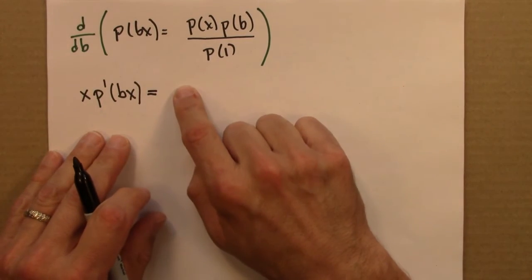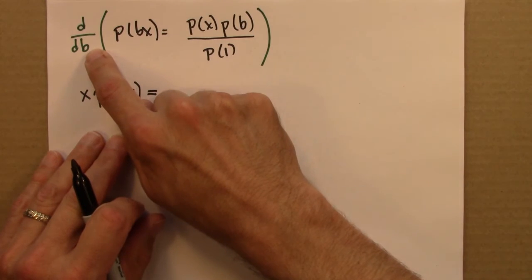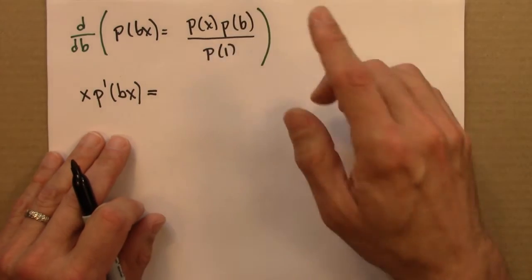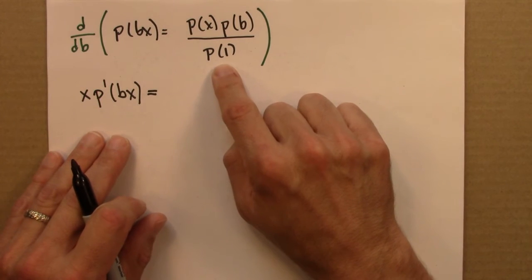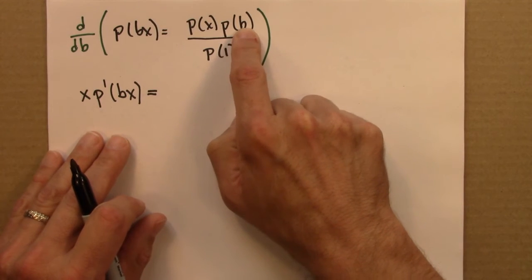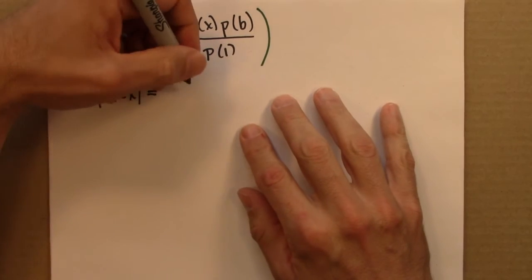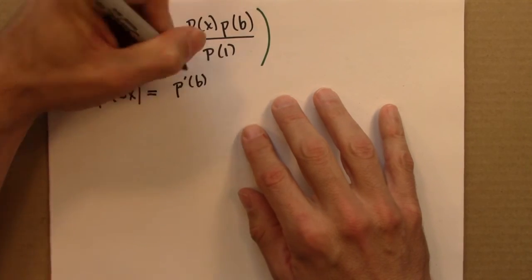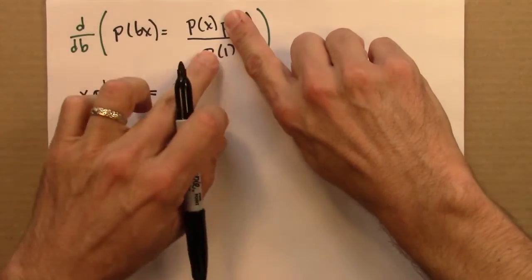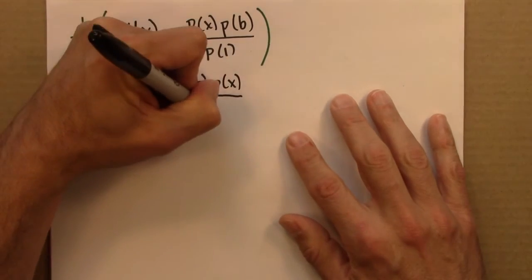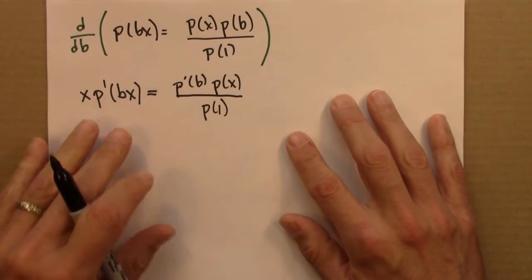Over here on the right hand side, again I'm taking the derivative with respect to B. P of x and P of 1, whatever they are, they don't depend on B. So those are just constants. The derivative of P with respect to B is just P prime of B. So I can write this whole thing as P prime of B. And then these are just constants. They go along for the ride. P of x over P of 1.